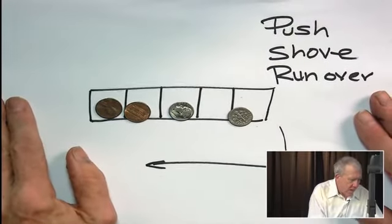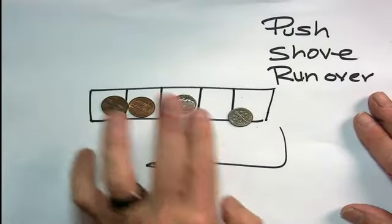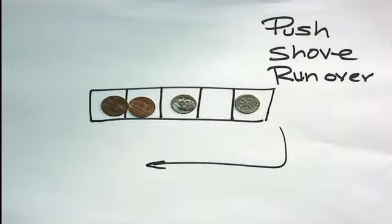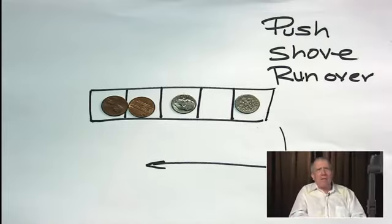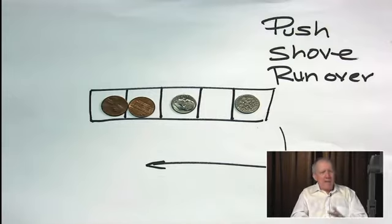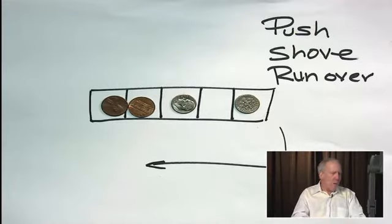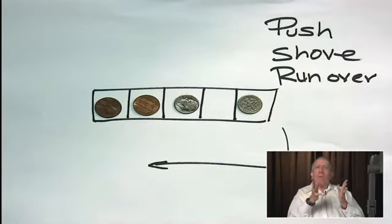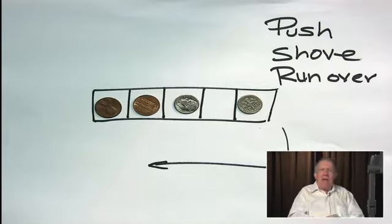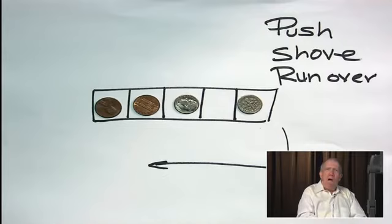And this is a class of games all played with coins. In this case, the coins are pennies and dimes. And maybe right is pennies because the copper and pennies, although there's very little copper actually in pennies, looks kind of red. And then the dimes are left. Now, both players push coins to the left in the direction of that. And the three games, push, shove, and run over, have slightly different rules.